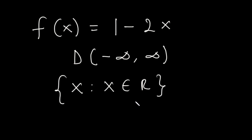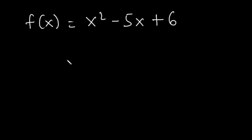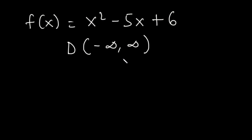What is the domain of this function: f of x is equal to x squared minus 5x plus 6? Like we did in the previous example, the domain for this function is going to be the set of all real numbers from negative infinity to infinity. This is because any real number you insert in place of x in this equation is going to make the function defined. So the domain is x is such that x is the set of all real numbers.